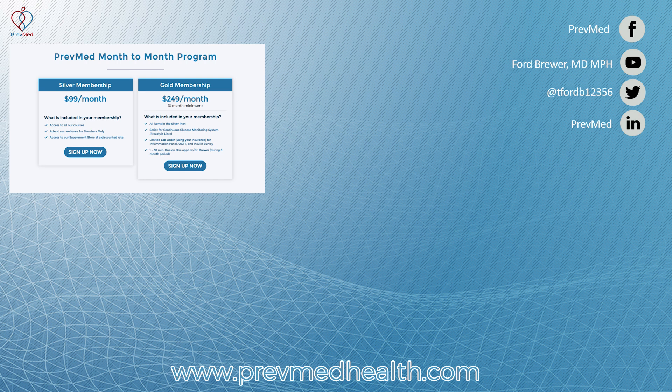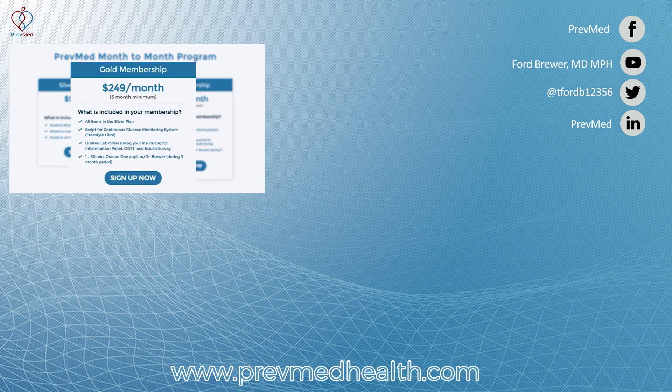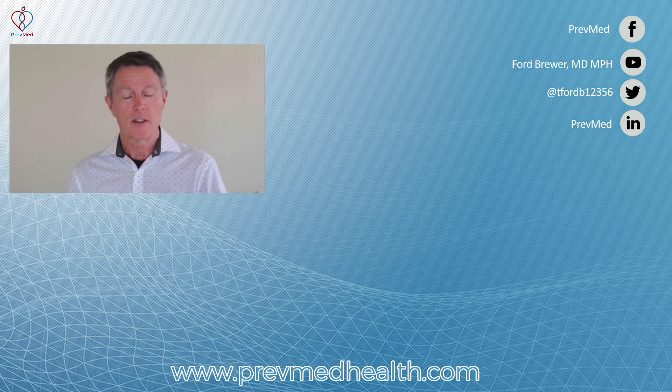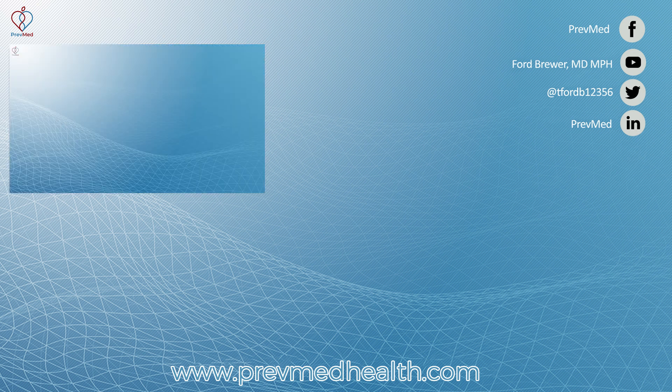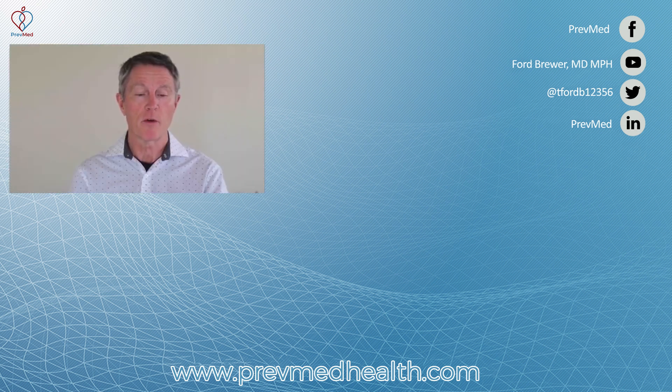Or I would suggest even more so the gold membership. You can get a script for a Freestyle Libre and find out what your blood sugar metabolism is doing on a daily basis. And you can get a lab order for inflammation, OGTT, and insulin survey. You can also get a 30-minute one-on-one with me. So I'm looking forward to seeing you. Cost is no longer an excuse. So if you're interested, go to go.prevmedheartrisk.com/prevmed-subscription or call us at 859-721-1414 or email us at myhealth@prevmedheartrisk.com. Looking forward to seeing you. Thank you.